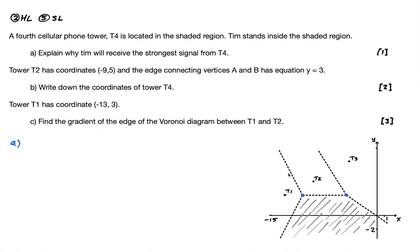Okay, well, if he's in the shaded region, because it's a Voronoi diagram, the closest tower to anywhere in this region is going to be T4. The closest tower to anywhere in this region is T1. Anywhere in this region is T2. Anywhere in this region is T3. So I'm going to say because T4 is the closest tower to anywhere in this shaded region.